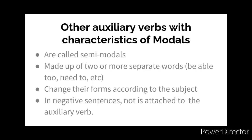To form negative sentences with semi-modals, 'not' is attached to the auxiliary verb that comes after the subject, not to the semi-modal phrase. For example, 'We weren't able to get the tickets for the trip' — 'weren't' comes after the subject 'we.' To form questions, we replace the auxiliary with the subject. For example, 'Weren't we able to get the tickets for the trip?'